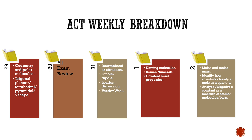We will learn how to convert between moles, mass, and molar mass, and we will identify how scientists classify moles as a quantity. Finally, we will analyze Avogadro's constant as a measure of how many atoms, molecules, or ions are in a compound. We will make sure to know the value of Avogadro's constant, which is 6.02 times 10 to the power of 23.